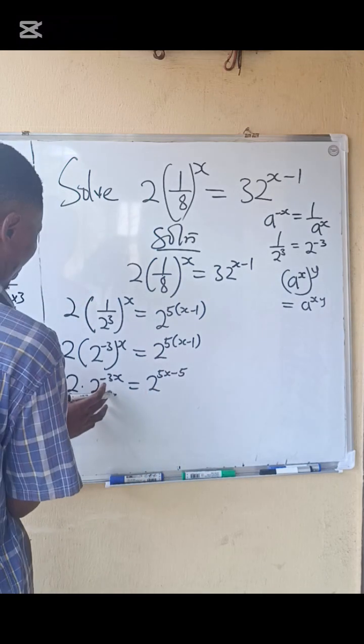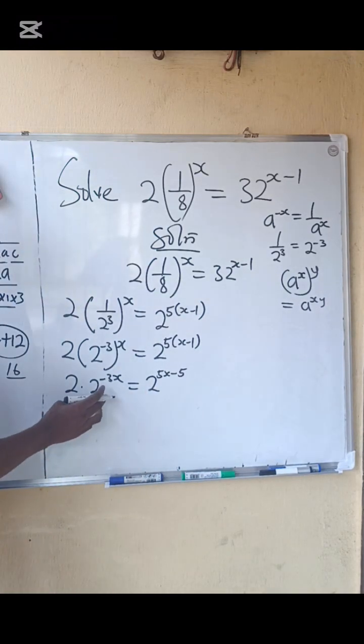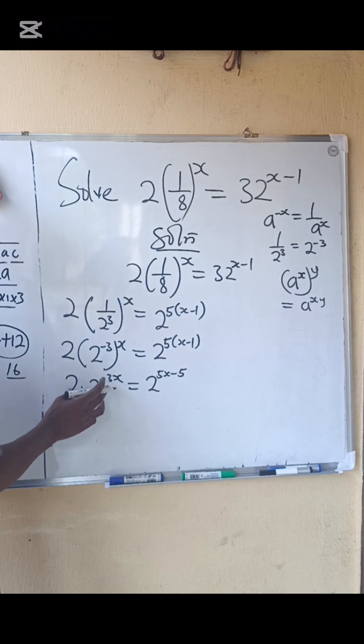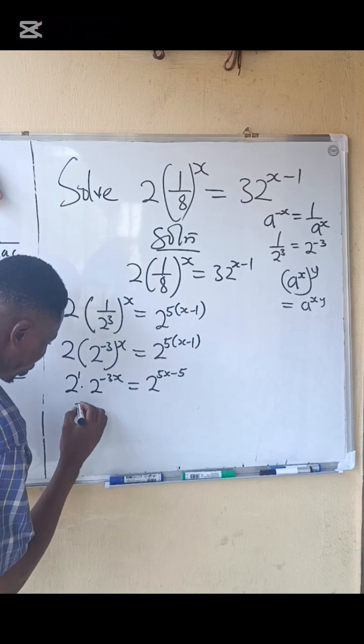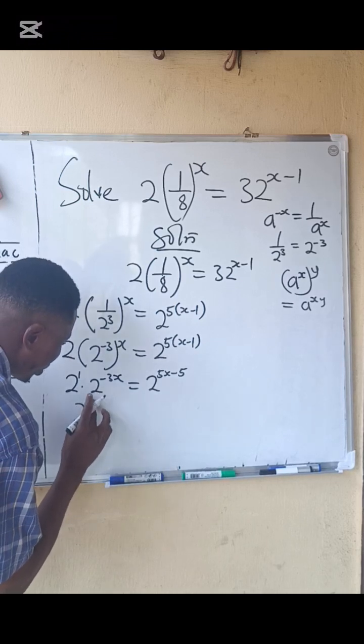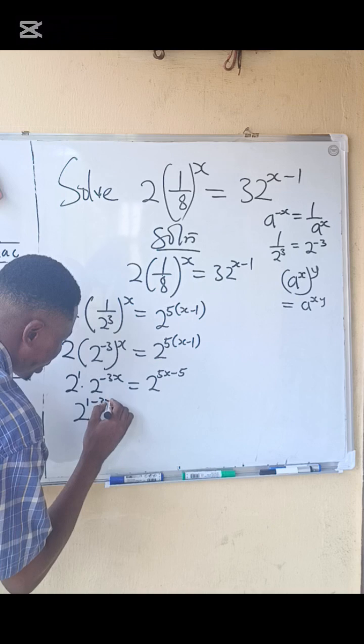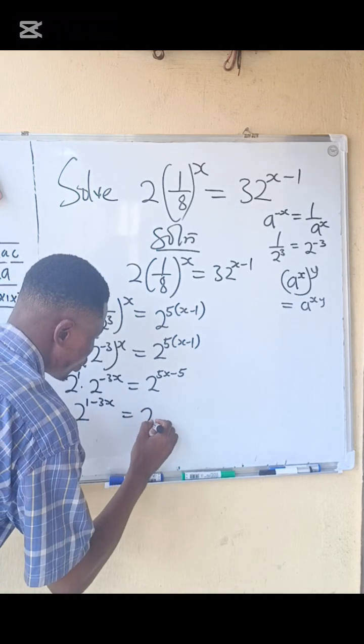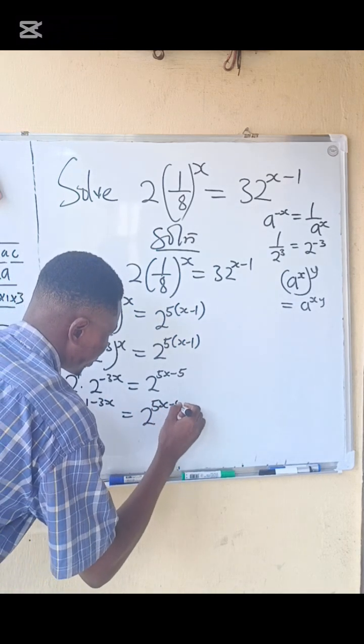Remember from multiplication rule of law of indices that whenever the bases are the same in multiplication, you add the powers. The power of 2 is 1. So we are going to take one of the base, which is 2, 1 plus, it is already negative minus 3x equals to 2 power 5x minus 5.